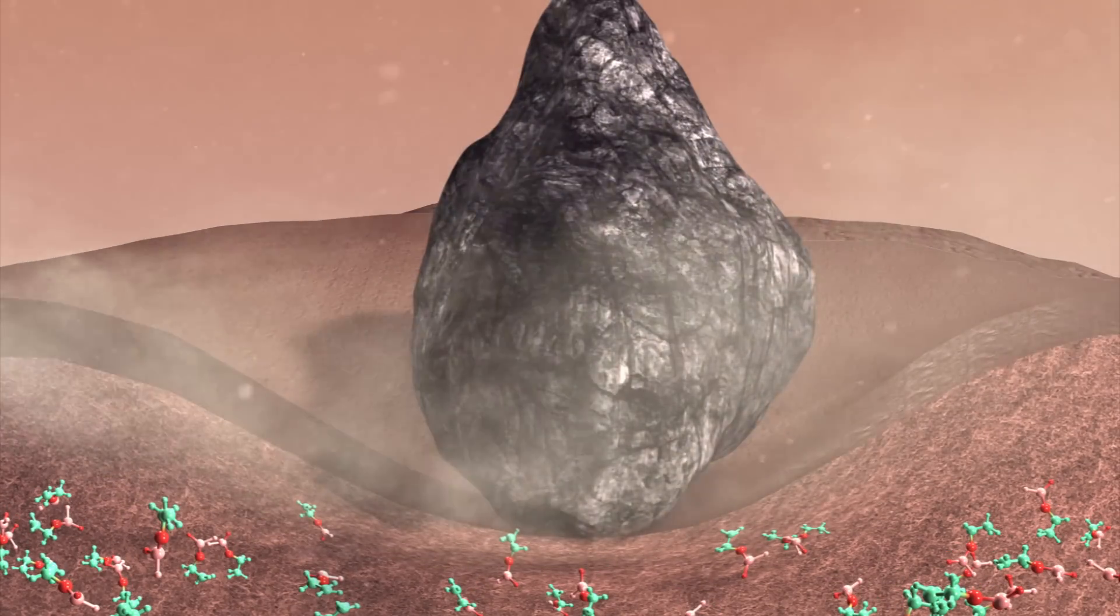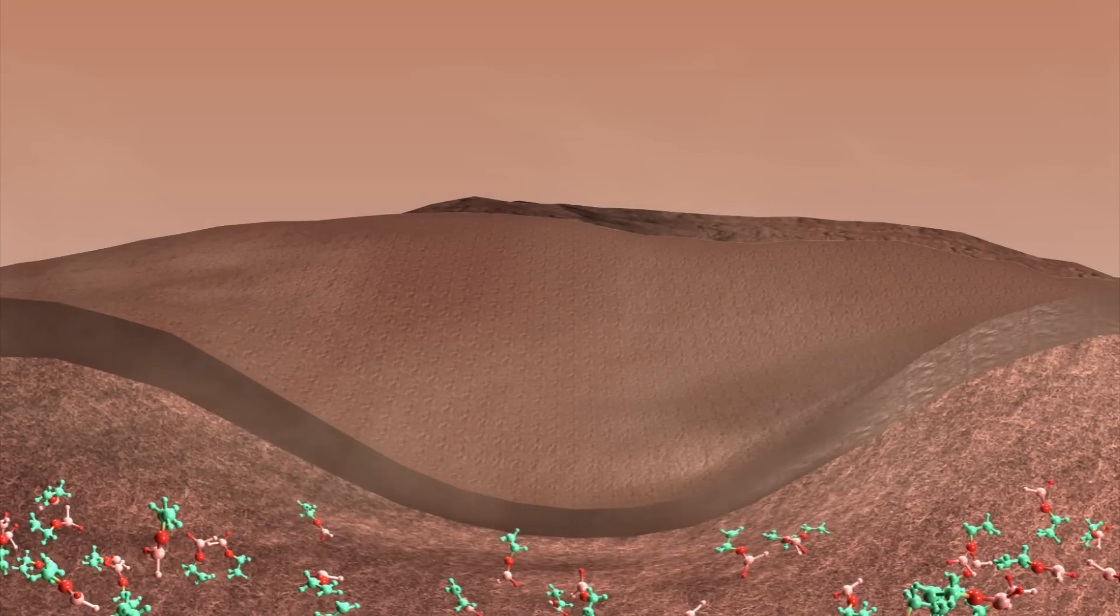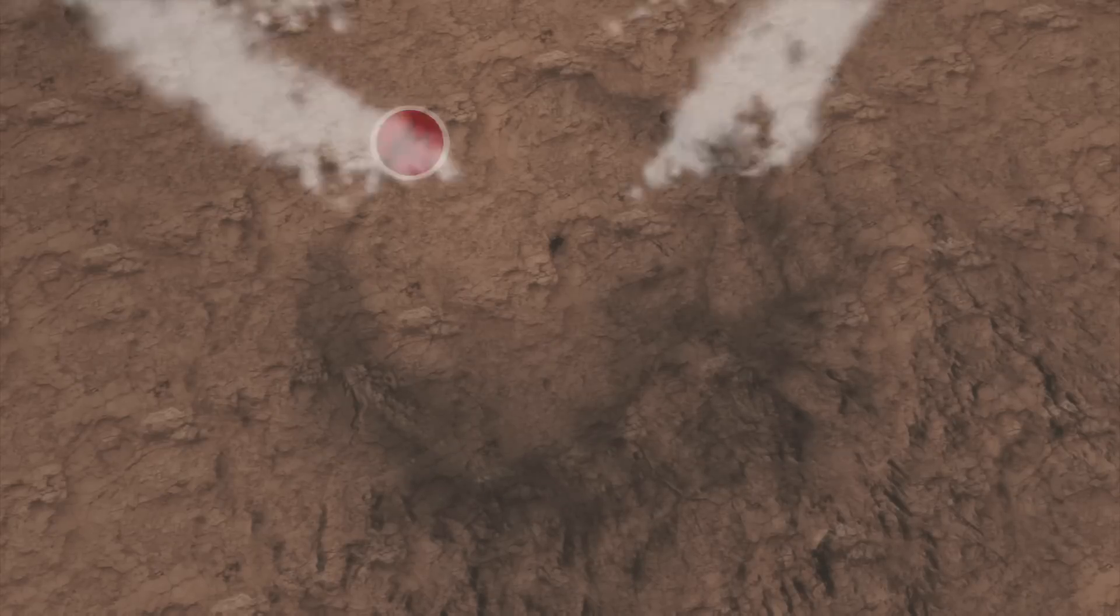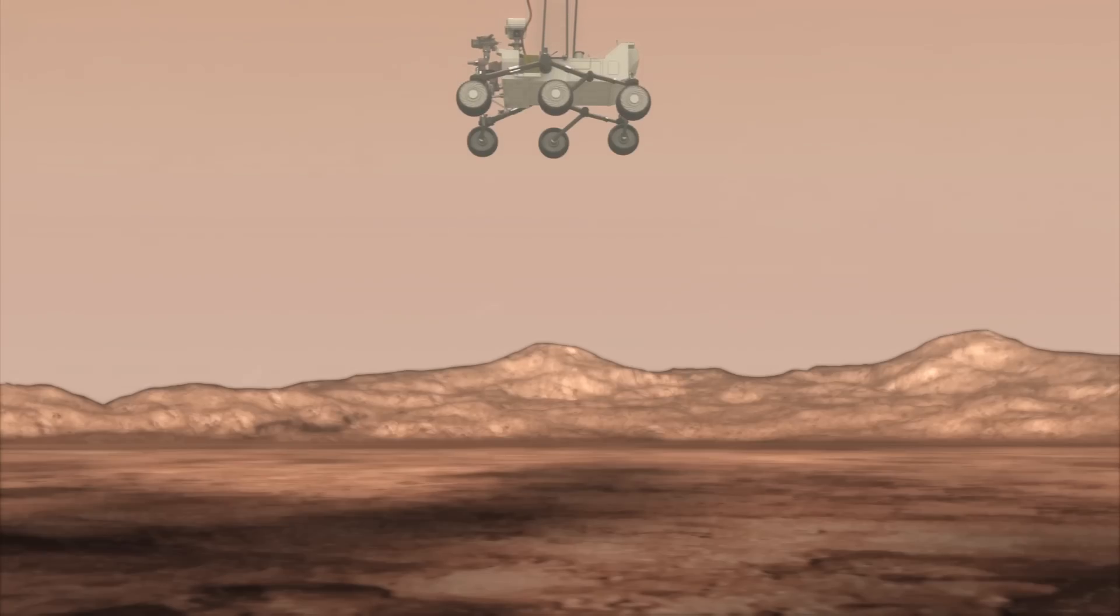If the rover finds complex organic molecules, it will likely do so in a crater that's less than 10 million years old. The Curiosity Mars rover will land in the 3.5 billion-year-old Gale crater, where it will look for newer craters to drill at.